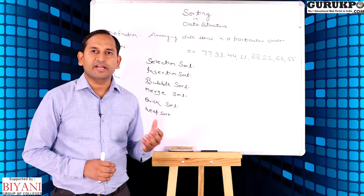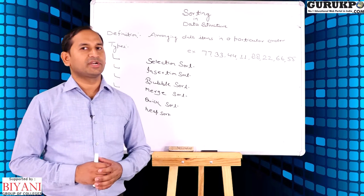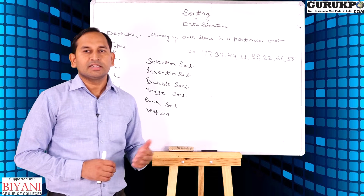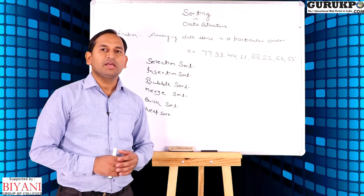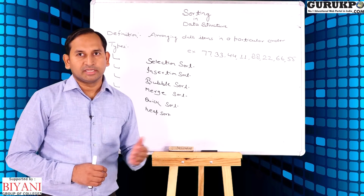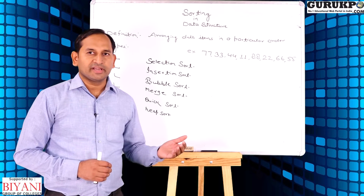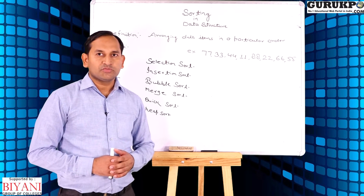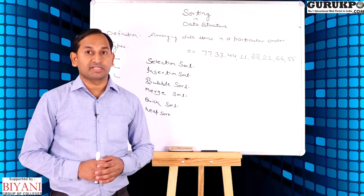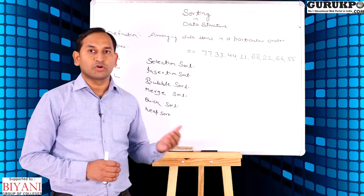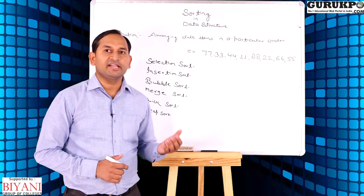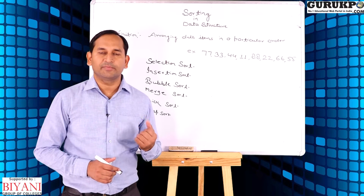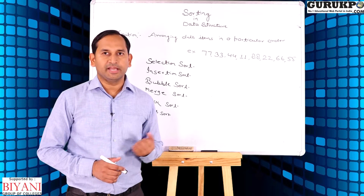Sorting is a process of arranging data in a particular order, either ascending or descending, or in a specific order such as alphabetically or numerically. It is very useful in case of searching. If we have a list which is already sorted, then we can easily access or retrieve data in a particular array or list.